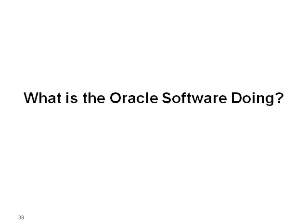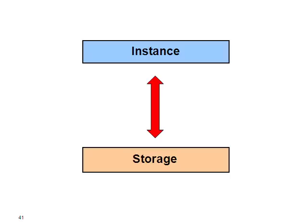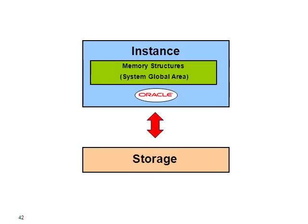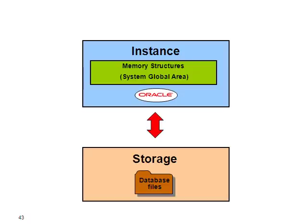So what is this Oracle software doing? You cannot even imagine, but in short there are two essential things to remember: the instance and the storage. In the instance you find memory structures — essentially the System Global Area, also called the SGA — and the Oracle software. At the storage level you will find your database files, and there are many of them.